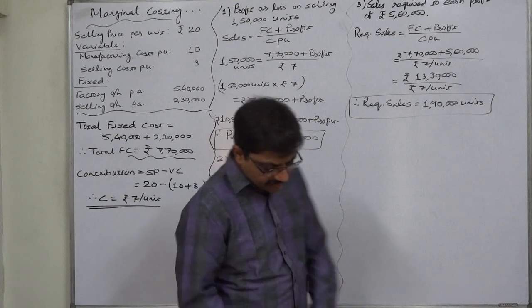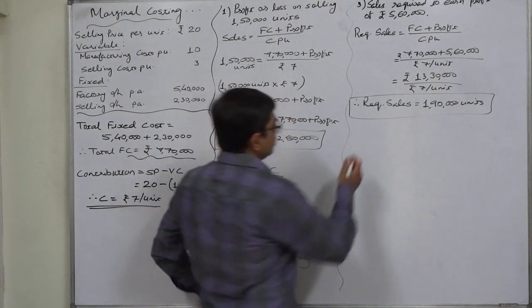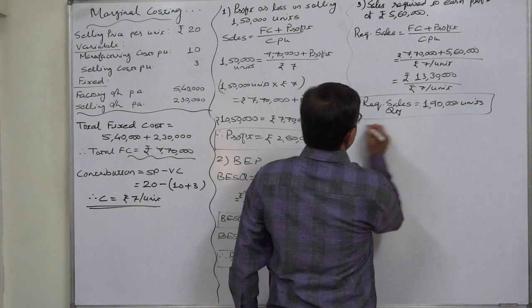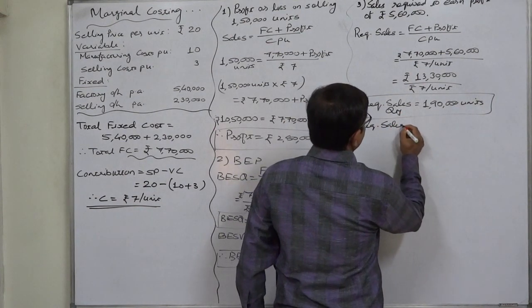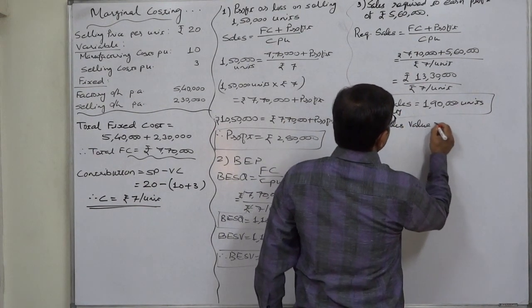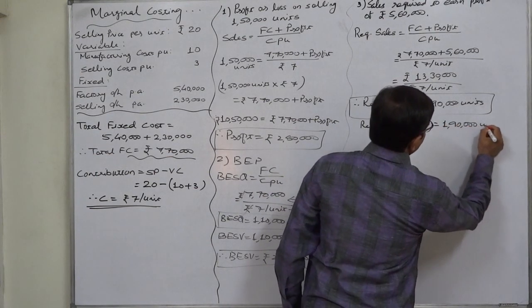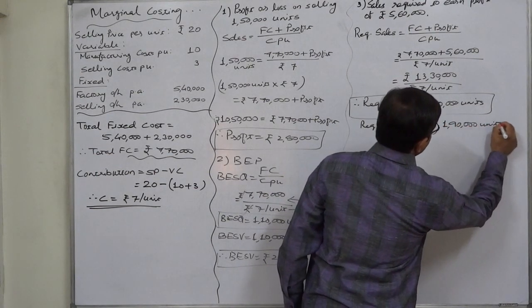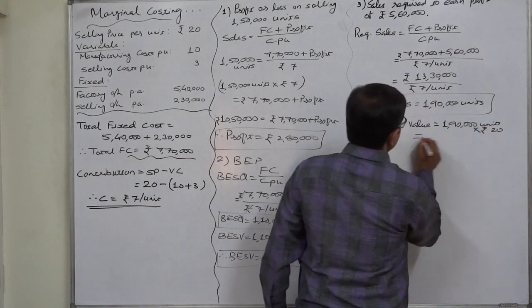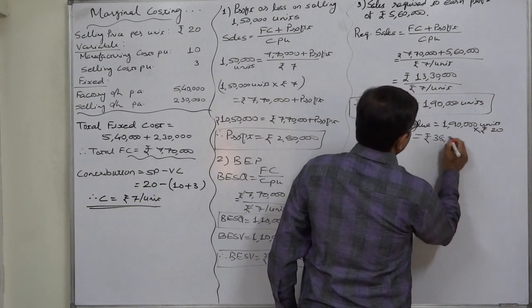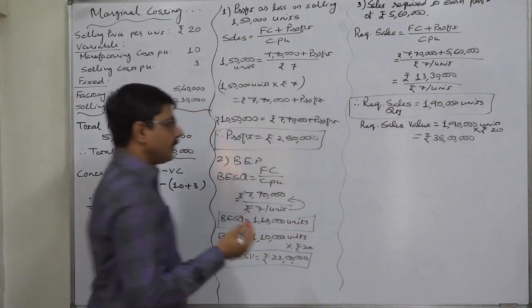The required sales value for earning ₹5,60,000 profit: 1,90,000 units into selling price ₹20 comes to ₹38,00,000.